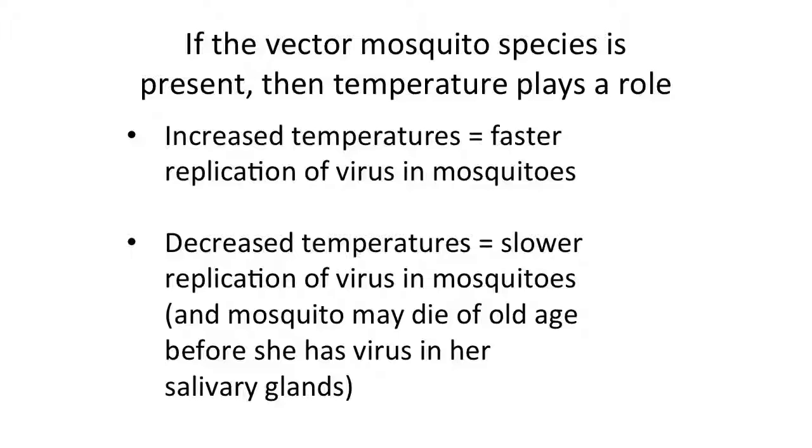We can relate transmission to temperature - if we have hot temperatures, the virus can replicate more quickly inside the mosquito, has a better chance of getting out of the midgut, through the hemolymph, into the salivary glands, and being stockpiled to be spat out at the next meal. With cooler temperatures, that amplification might be happening, but it might not yet have reached the salivary glands by the time the mosquito feeds again. And the chance that it will get yet another meal goes down as the female gets older. So the key is warm temperatures for the amplification of the virus.